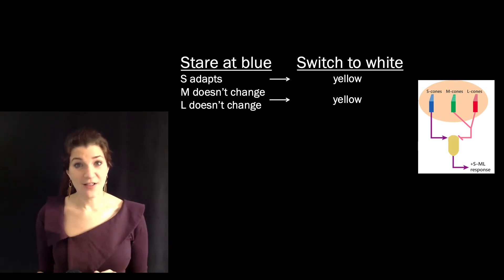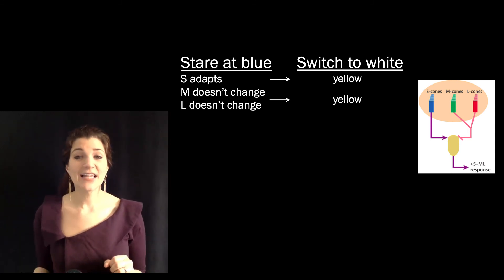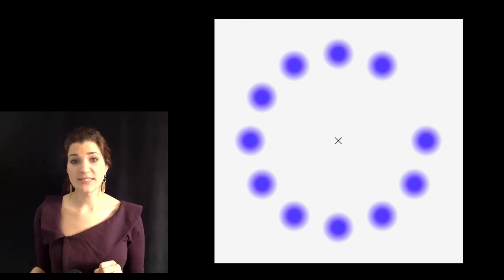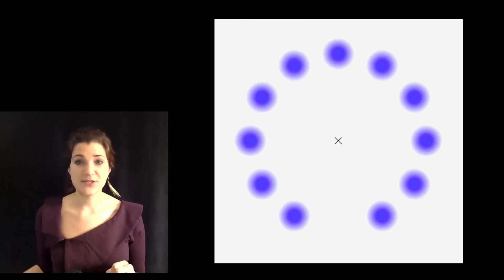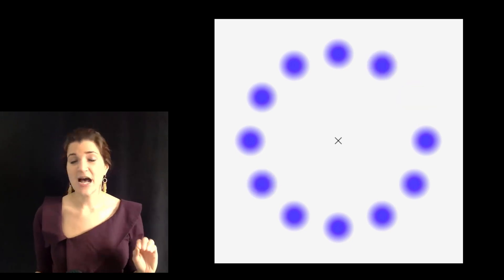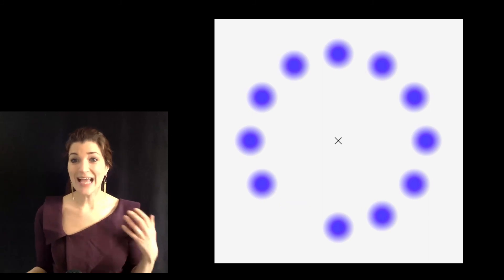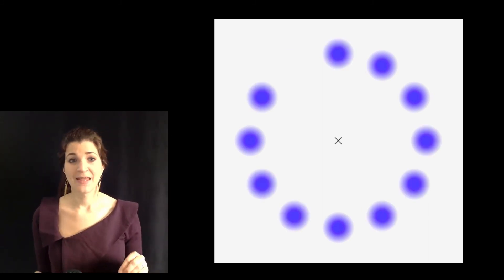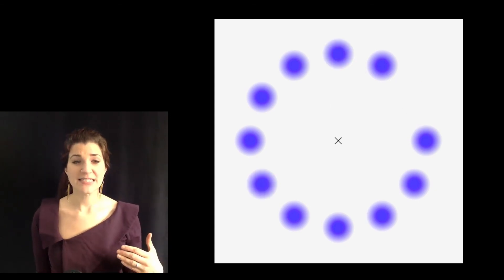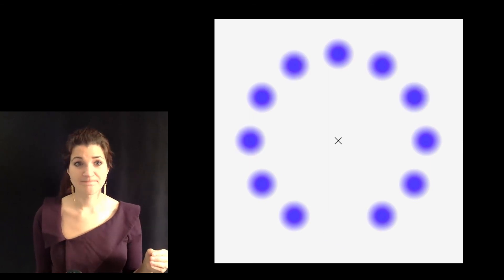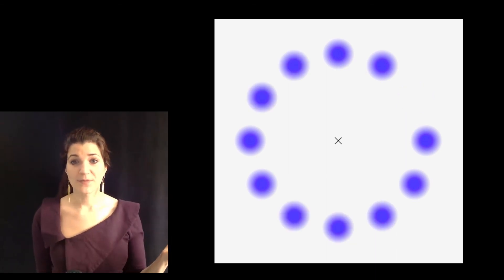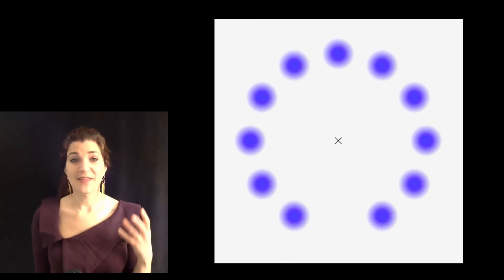One nice way of experimenting with color afterimages is the lilac chaser illusion. Keep your eyes fixed at the X in the center of the screen. You see one dot in a ring of dots blinking off at a time, creating the impression of a single dot running around the circle — a motion illusion. As you continue to stare, you'll notice that the missing dot, rather than looking like a blank gray space, starts to look yellow as the pigment in the short cones is depleted. Over time, the blue dots present may also fade into the background as the short wavelength sensitive cone photopigment becomes very depleted. If you move your eyes, the yellow dot disappears and the blue dots reappear, because the blue circles now fall on different cones that have fresh photopigment.